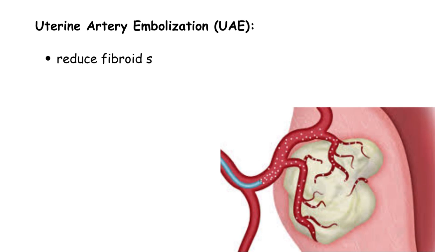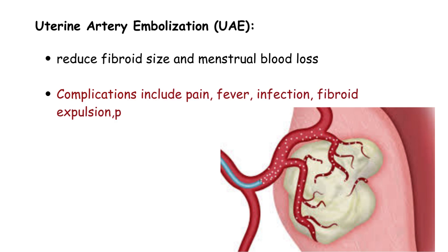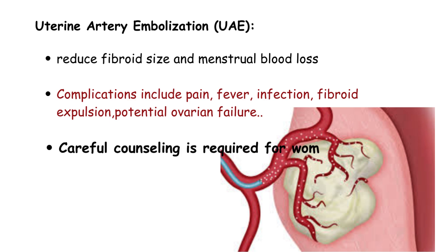Uterine artery embolization reduces fibroid size and menstrual blood loss. Complications include pain, fever, infection, fibroid expulsion, and potential ovarian failure. Careful counseling is also required for women wishing to retain fertility.